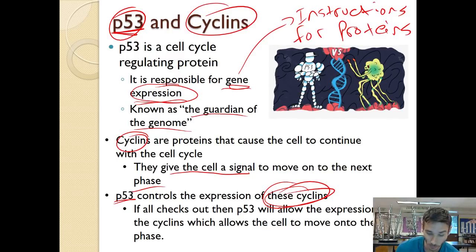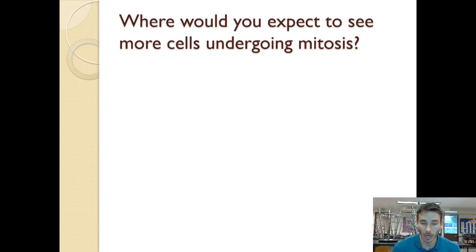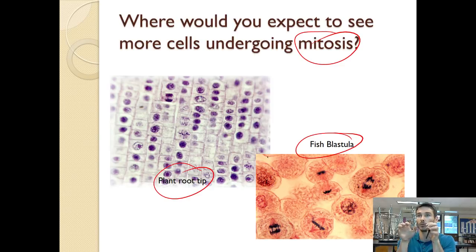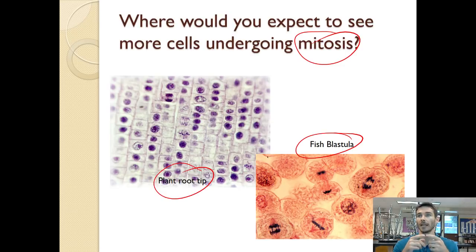Now that we know about p53 and cyclins as the main cell cycle regulation proteins, where do we expect cells to go through mitosis most? Good examples are a root tip or a fish blastula. A plant root tip is constantly extending into the soil seeking water and minerals, so there's a lot of cell division there. A fish blastula is the very beginning of a fish embryo, where many cells divide rapidly to start creating the fish.